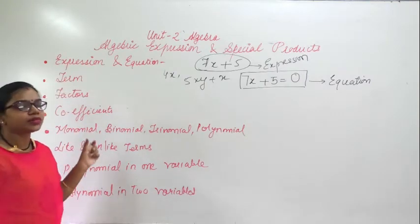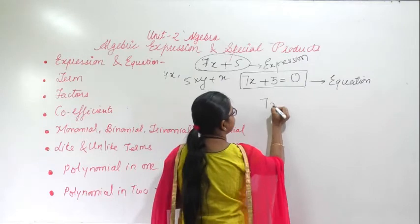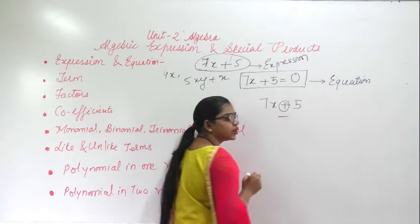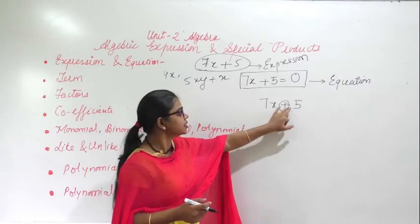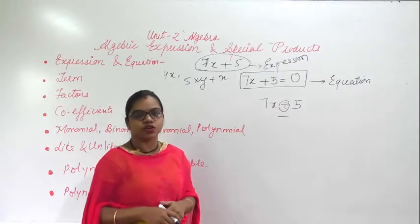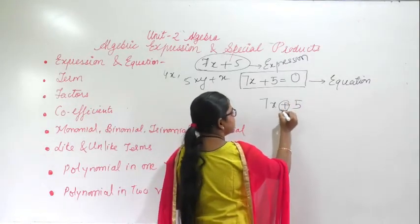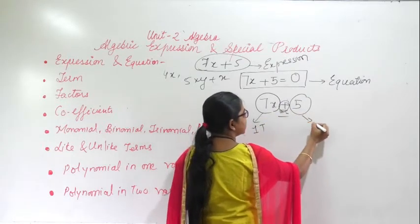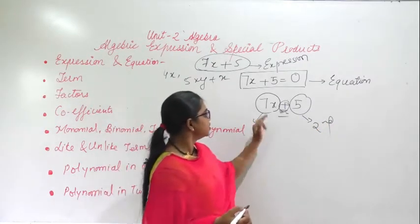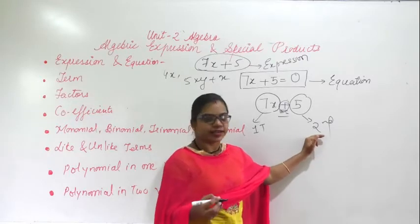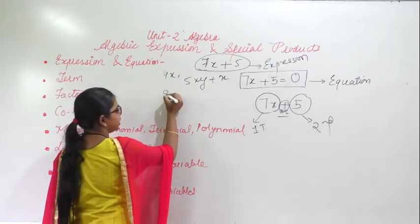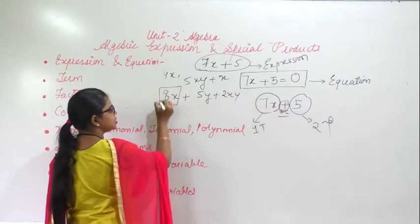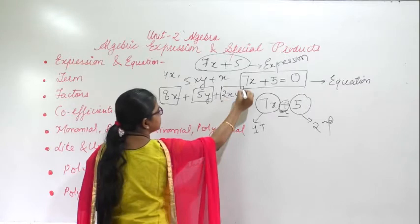Now the word 'term'. If I write 7x plus 5, the plus or minus sign separates the terms. So 7x is the first term and 5 is the second term. If I write 8x plus 5y plus 2xy, then 8x is the first term, 5y is the second term, and 2xy is the third term.